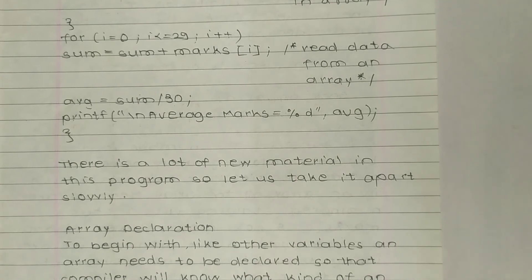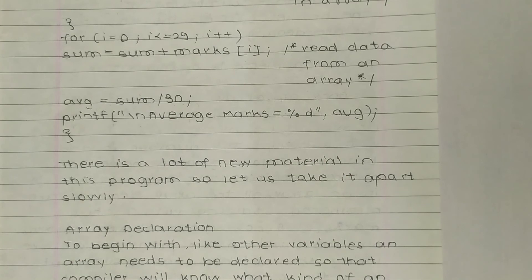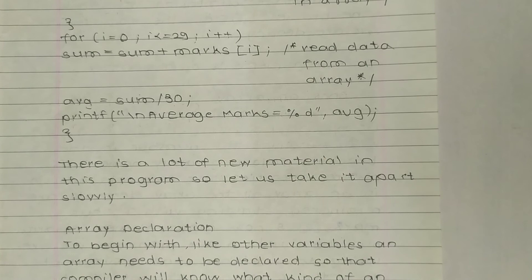The loop starts from i = 0 and goes up to 29, incrementing i each time, computing sum = sum + marks[i] to accumulate the next element from the array. Then average = sum / 30, because there were 30 students total.